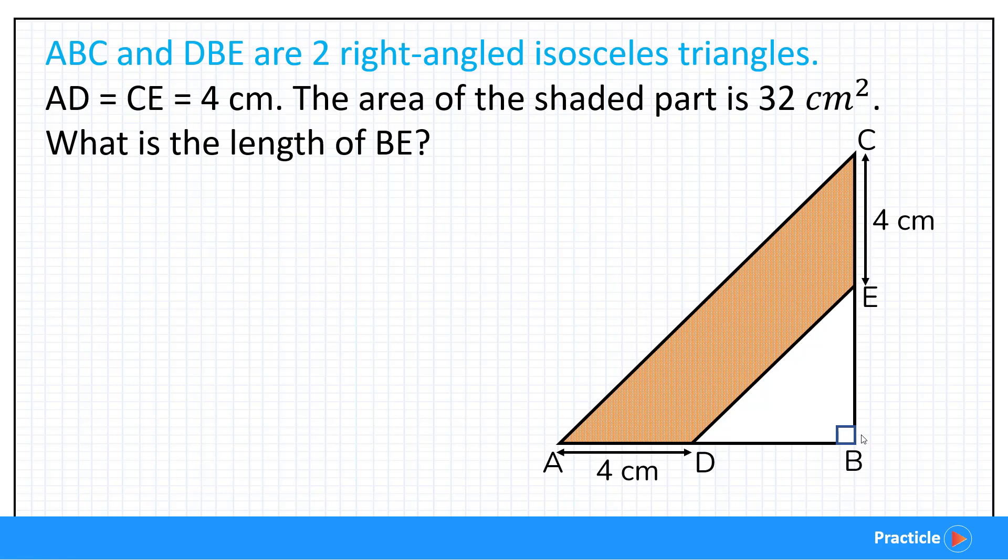Next, we are given that AD equals to CE equals to 4CM. So now we know that these two lengths over here and here are the same. The area of the shaded part is 32 square centimeters. So let's think about what we can tell from that. When we subtract the area of the smaller triangle DBE from the area of the bigger triangle ABC, the remaining area that we see over here is going to be 32 square centimeters. Do you see that?